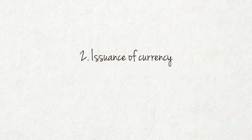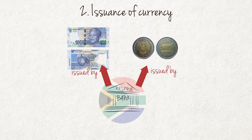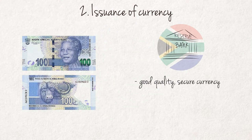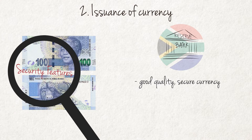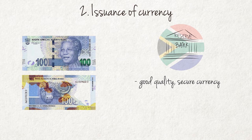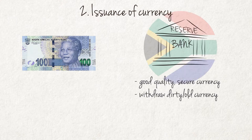Issuance of currency: Currency comprises banknotes and coins used by the public. Banknotes and coins are issued by the South African Reserve Bank and used in transactions by the public. This is an expensive function of the central bank, often not recognised by the public. It is simply assumed that good quality banknotes and coins will be available for commercial transactions. Banknotes are printed with good security features to make forging difficult. After circulation, dirty and torn banknotes must be withdrawn from circulation and destroyed.